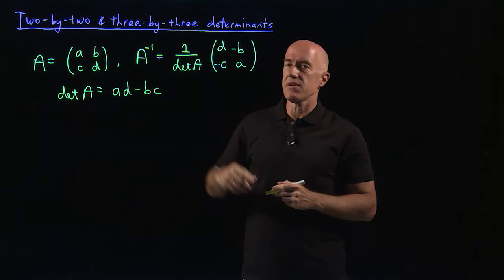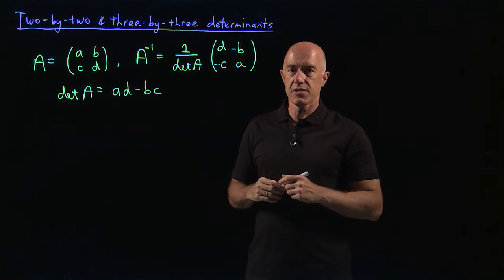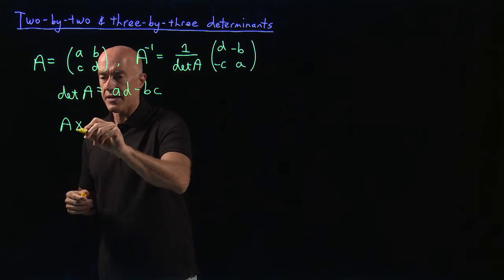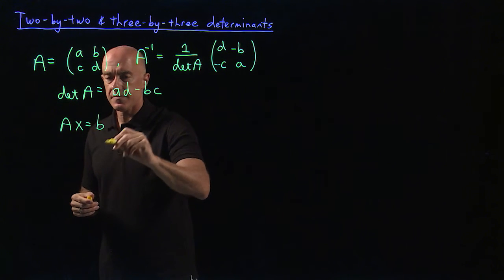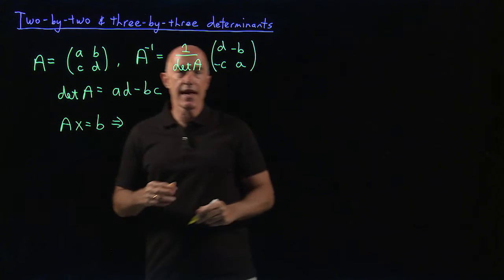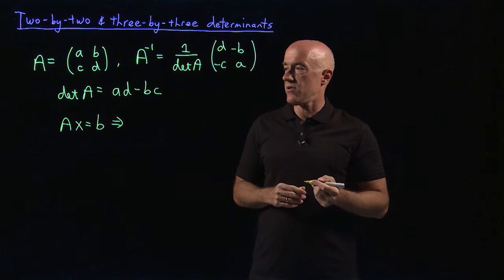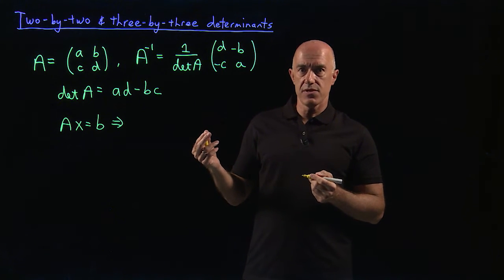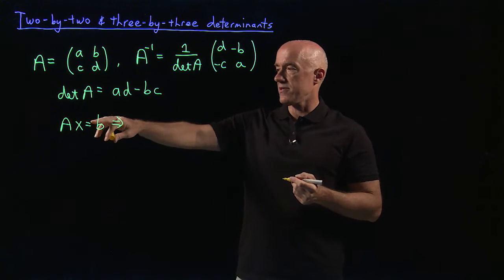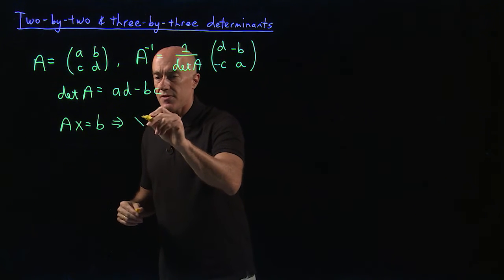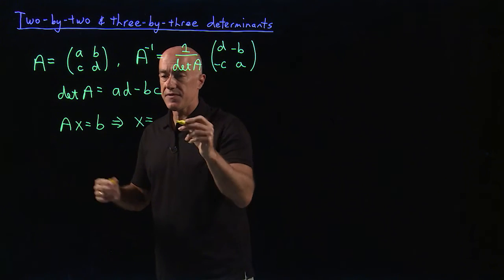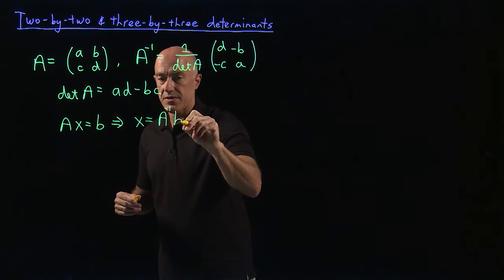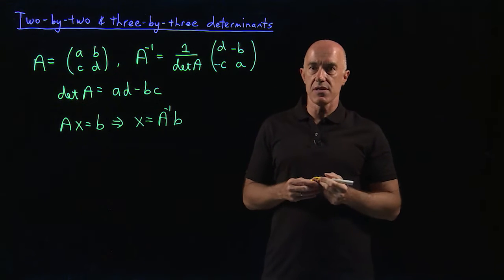So what happens if there's an inverse to the matrix A? Then if you have a system of linear equations, Ax equals B. If it turned out that the determinant of A was not zero, then you can invert, find the inverse of A, and you can multiply on the left by A inverse. So you can solve this equation, at least formally, by x equals A inverse times B. And that would be a unique solution.